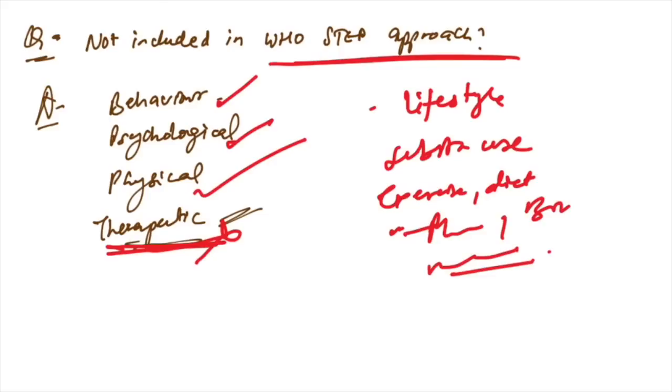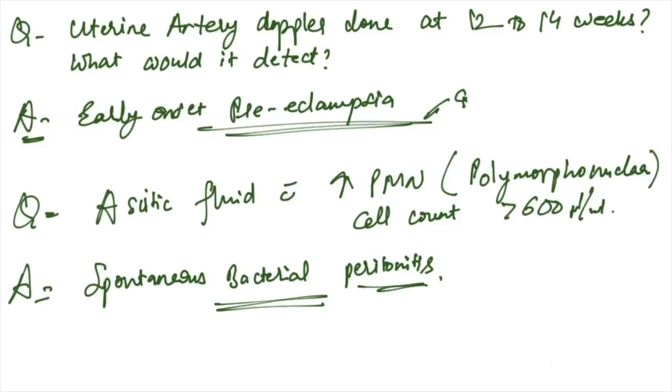Uterine artery Doppler done at 12 to 14 weeks - what would it detect? It detects early onset preeclampsia. This is the answer. It is done only for detecting early onset disease like preeclampsia.